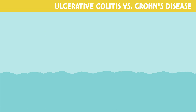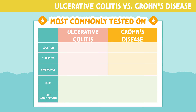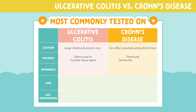Now let's do a final review comparing the most commonly tested topics for ulcerative colitis and Crohn's disease. Ulcerative colitis affects the large intestine and rectum only, where Crohn's disease can affect anywhere along the GI tract. Ulcerative colitis is inflammation that runs through the submucosal or mucosal tissue layers, where Crohn's disease inflammation runs transmurally, or across the entire wall.